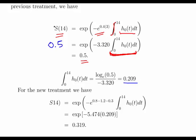Now doing the same thing for the new treatment: everything is the same except we include the beta zero term, which gives 0.8, which is beta zero, minus 1.2 (which is common to both treatments), minus 0.3, which is three days times beta two = minus 0.1. So beta two is minus 0.1 and X is 3 days. That gives our equivalent expression.